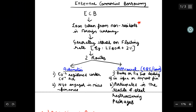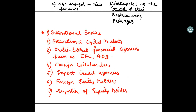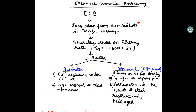Maine kuch short notes banaye hain — notebook mein utar lo ya phir screenshot le lo, you can revise it very simply. ECB are loans taken from non-residents in foreign currency. Non-residents mein include hote hain: international banks, international capital markets, multilateral financial agencies such as IFC and ADB, foreign collaborators, foreign equity holders, export credit agencies, and suppliers of equipment. These loans are issued on floating rate, for example LIBOR plus two percent. Do roots hain — automatic and approval.